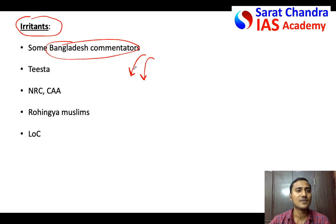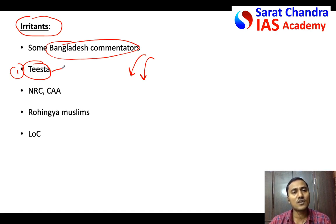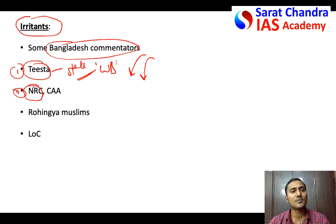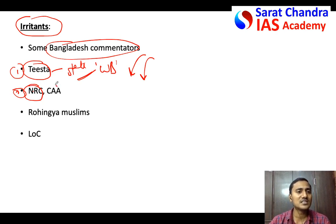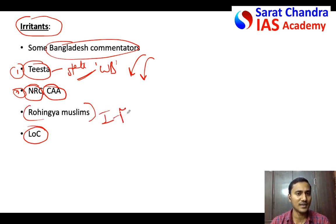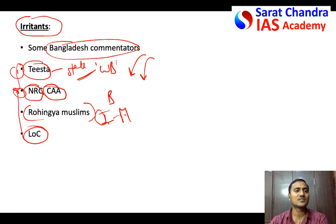Let's look at some major irritants. First, the Tista water issue is unresolved till today — river water is a state subject in India, and without the cooperation of the West Bengal government, India cannot resolve it. Second, the National Register of Citizens in Assam denies citizenship to several illegal migrants and wants to send them back to Bangladesh, which Bangladesh is not ready to accept. Third, the Citizenship Amendment Act is uncomfortable for Bangladesh. Fourth, India promised several lines of credit but could not implement most of them. Fifth, on the Rohingya Muslims issue, Bangladesh is asking India to talk to Myanmar and take them back, but India's stand is different.